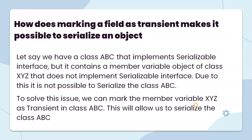How does marking a field as transient make it possible to serialize an object? Suppose we have a class ABC that implements the Serializable interface, but it contains a member variable — an object of class XYZ — that does not implement the Serializable interface. Due to this, it is not possible to serialize ABC. To solve this, we can mark the member variable XYZ as transient in class ABC, which will allow us to serialize class ABC.